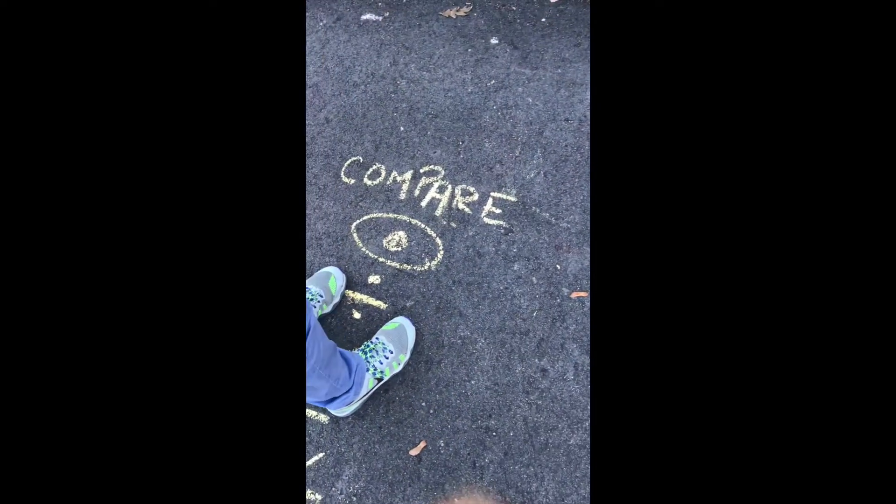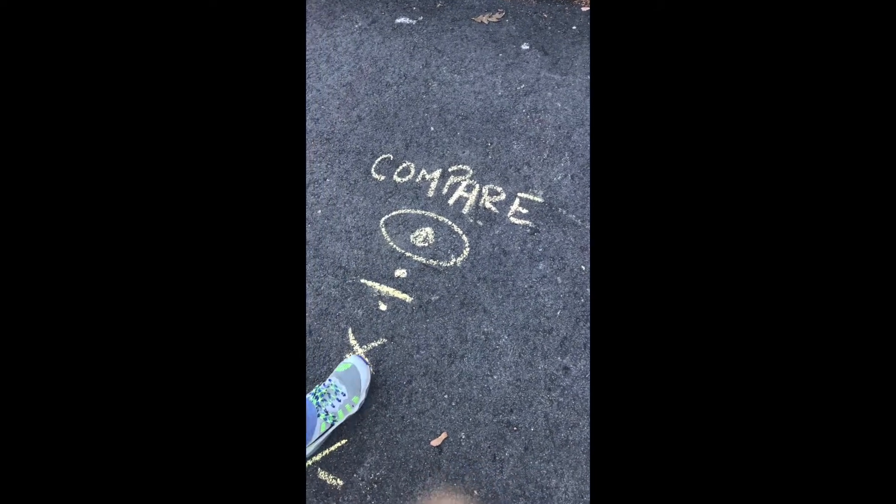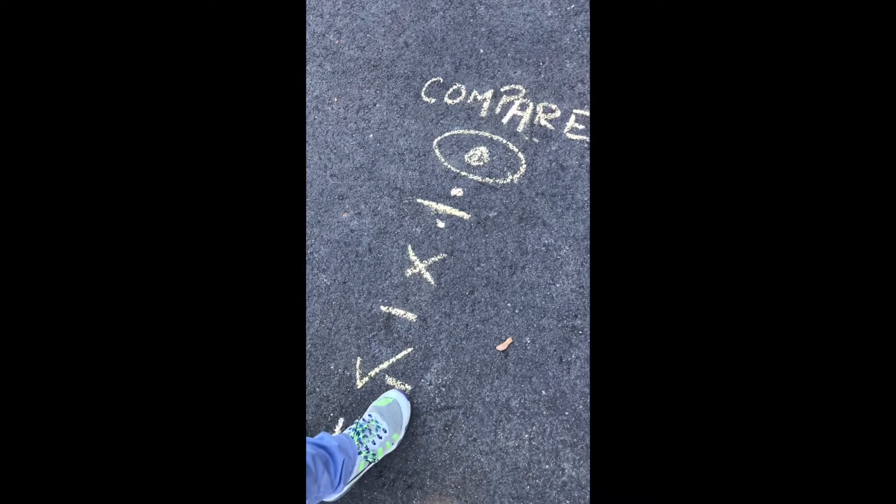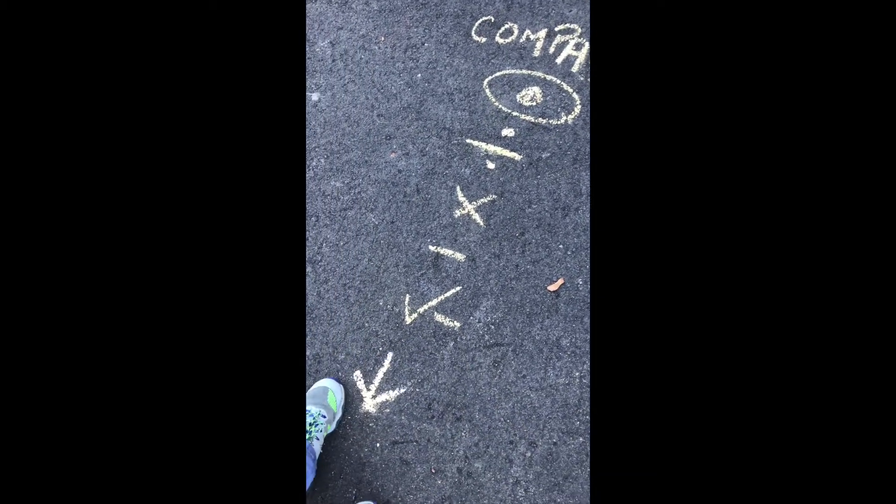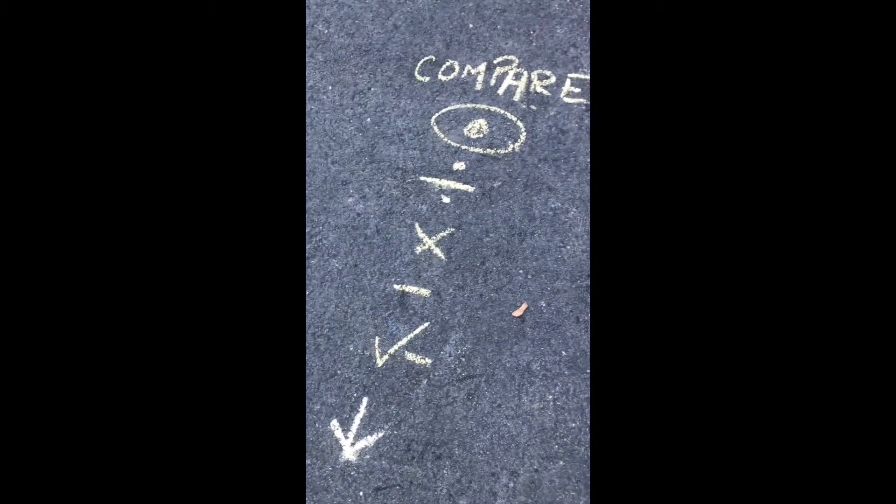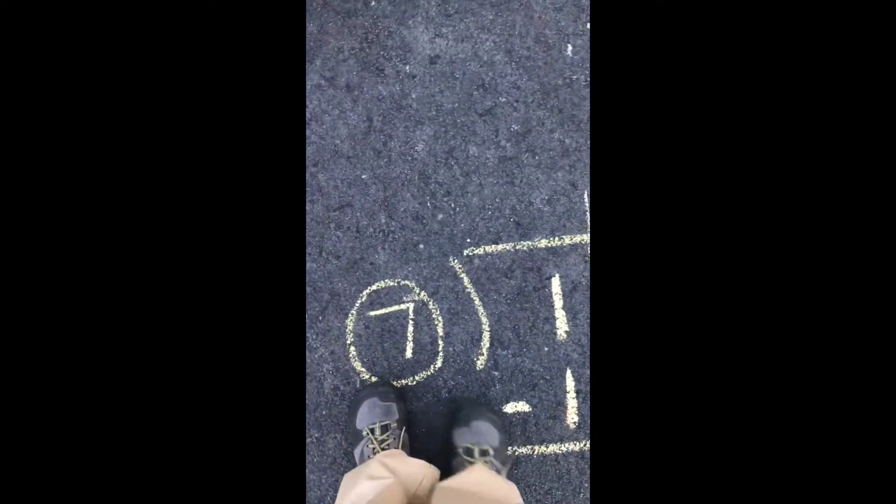So the first thing you want to do is compare. Then you're going to want to divide. Then multiply. Then you want to subtract. Then this one you have to check your subtraction. And then you have to bring them down. Okay. So while you tell me those steps one at a time, I'm going to do them over on this division problem, okay?